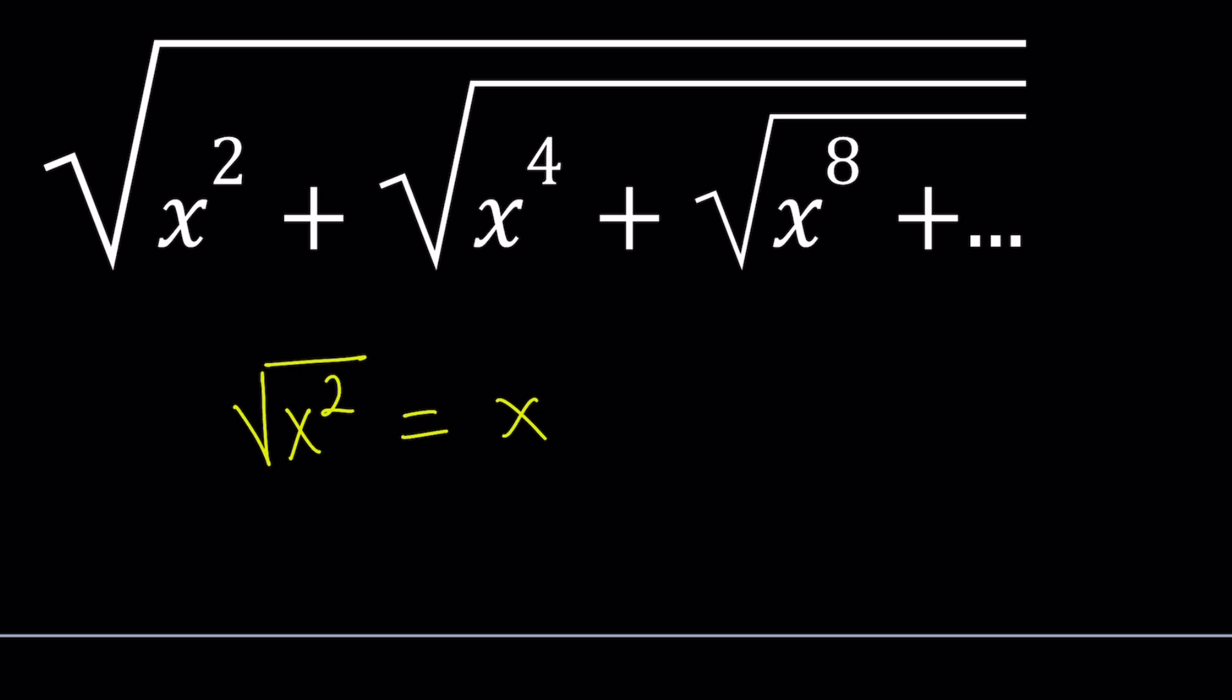What happens if you have something like this, though? You have x to the fourth. What is the square root of x to the fourth? Well, it is the same. You just divide 4 by 2. It becomes x squared. Because what number squared is x to the fourth? The answer is x squared. And then you can answer the same question for x to the eighth. The square root of x to the eighth is going to be x to the fourth power.